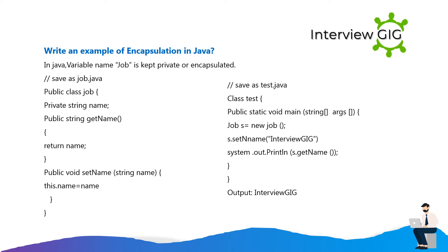Write an example of encapsulation in Java. In Java, variable name 'job' is kept private or encapsulated. Save as Job.java. Public class Job { private String name; public String getName() { return name; } public void setName(String name) { this.name = name; } } Save as Test.java. Class Test { public static void main(String[] args) { Job s = new Job(); s.setName("InterviewGig"); System.out.println(s.getName()); } } Output: InterviewGig.